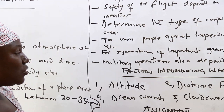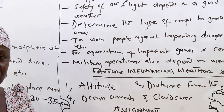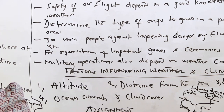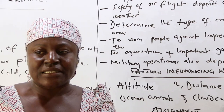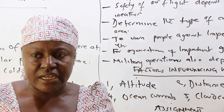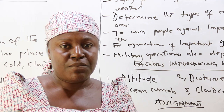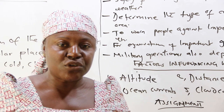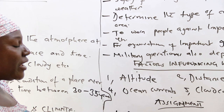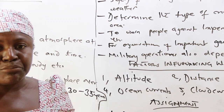Now the last thing we shall look at are the factors influencing weather and climate. The first factor we shall consider is altitude — the height of a place above sea level. In geography, temperature decreases with height: the higher you go, the cooler it becomes. For every 1,000 meters ascension upward into the atmosphere, there is a reduction in temperature of about 6.5 degrees Celsius, and that reduction in temperature is called the Neumann-Lafs Bridge. Areas found at higher altitude tend to experience a much lower temperature.